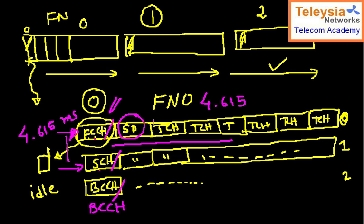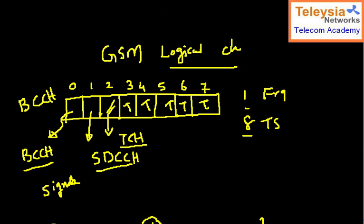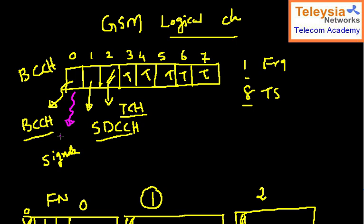The logical channel decides what kind of information travels over the air interface on a physical channel. Now let me explain multi-frames. If you track the pattern of what is coming on time slot zero, after a certain number of frames the pattern gets repeated — this pattern from time slot zero is called a 51 multi-frame. If you define a time slot as SDCCH, its pattern is also a 51 multi-frame.